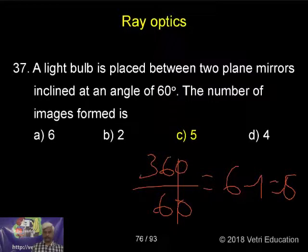Here the answer comes 6. If an even number comes, we have to subtract 1. Therefore, 5 is the correct answer.